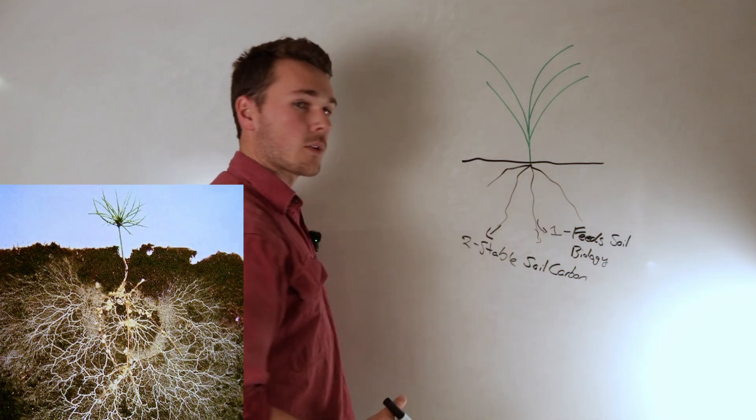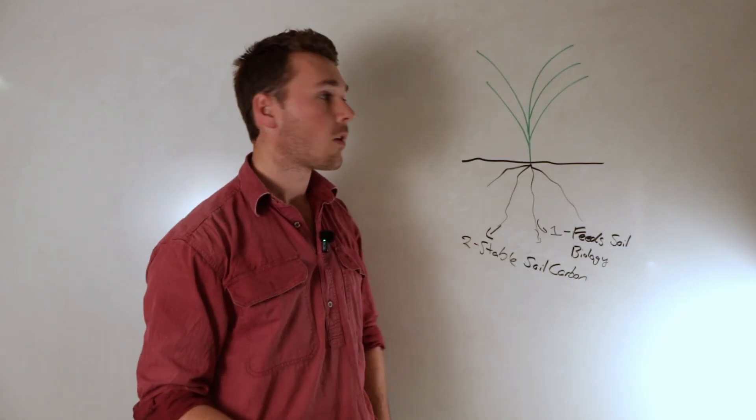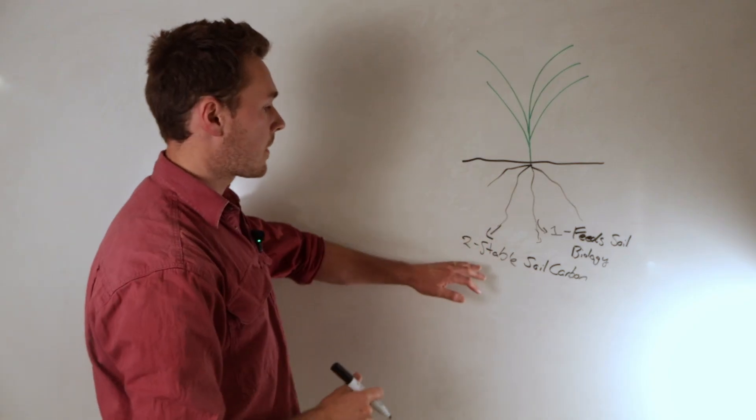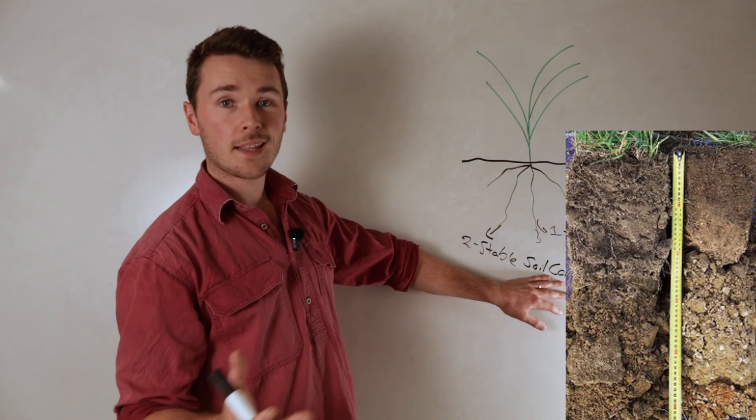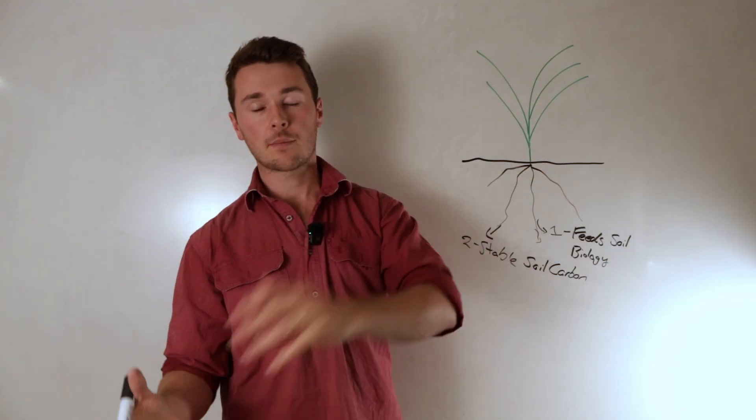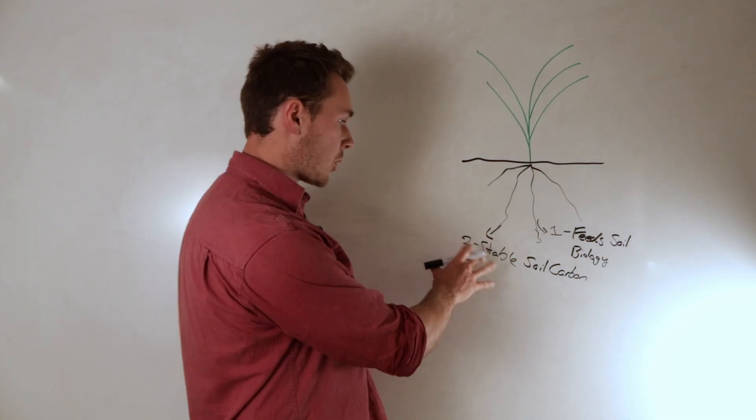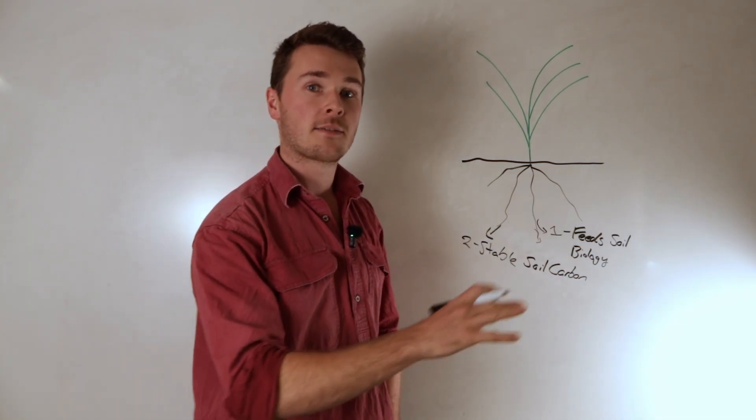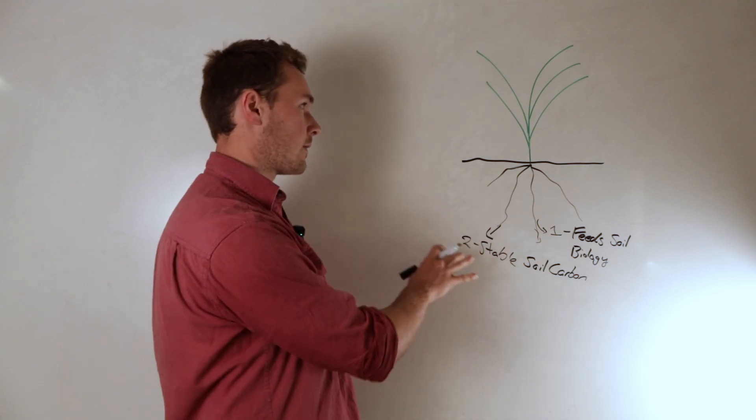The next component is that the plant will release this to mycorrhizal fungi to build stable carbon. Dr. Christine James talks about how about 40% of the carbon released as root exudates ends up as stable soil organic carbon. Compare this to about 8% of the above ground biomass that decomposes. 40% is a massive conversion rate of that soil carbon.